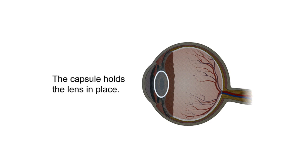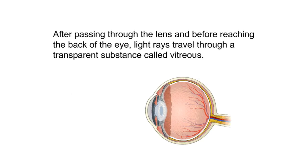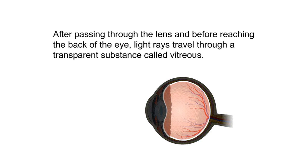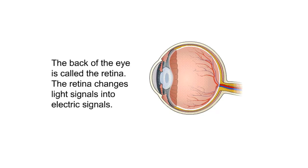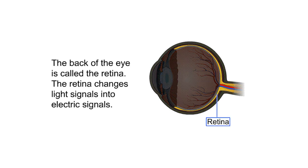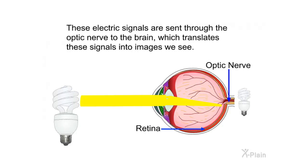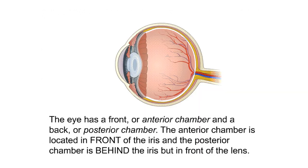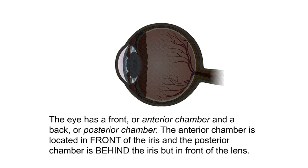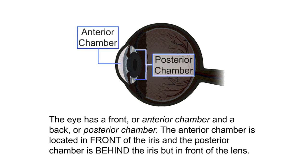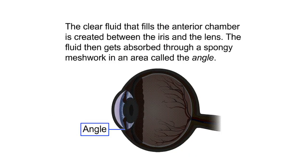The capsule holds the lens in place. After passing through the lens and before reaching the back of the eye, light rays travel through a transparent substance called vitreous. The back of the eye is called the retina, which changes light signals into electric signals. These electric signals are sent through the optic nerve to the brain, which translates them into images we see. The eye has a front or anterior chamber and a back or posterior chamber. The anterior chamber is located in front of the iris, and the posterior chamber is behind the iris but in front of the lens.